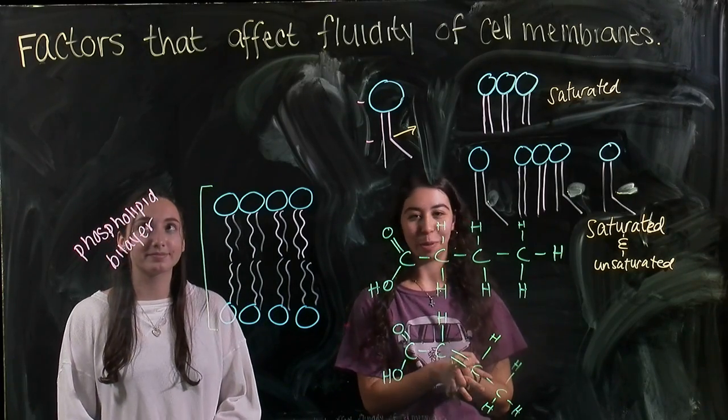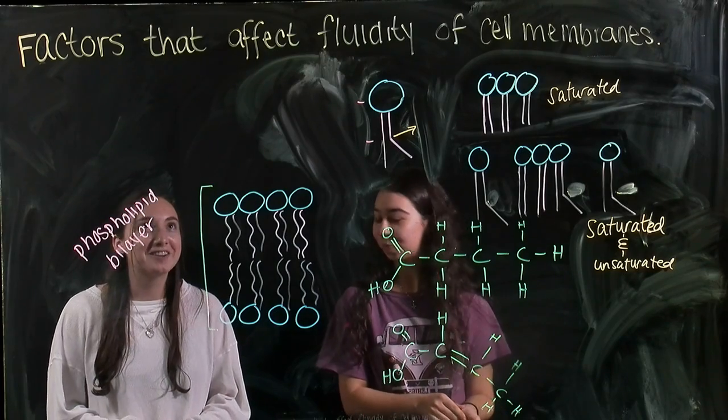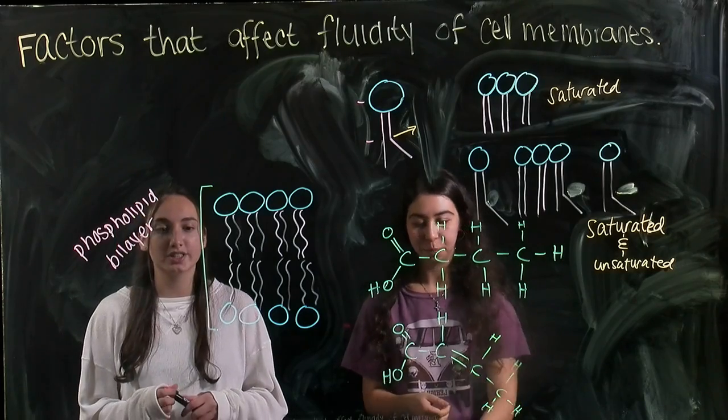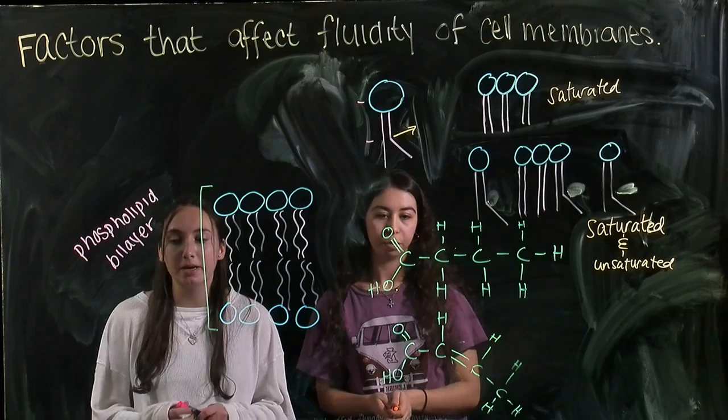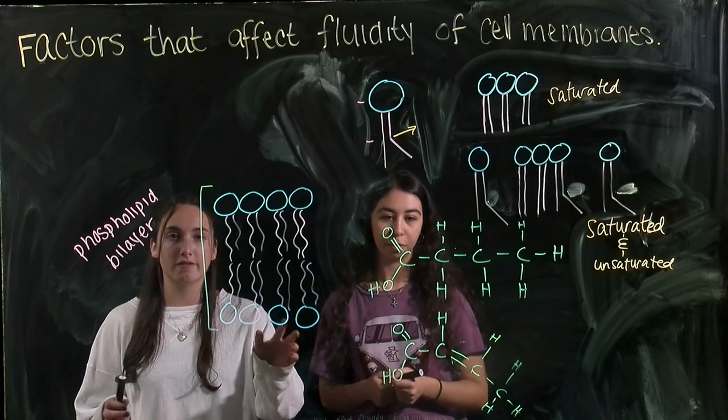All right, so today we're going to be talking about a couple of factors that affect the fluidity of cell membranes. To understand the factors that affect the fluidity, we first have to understand the structure of a cell membrane. A cell membrane is made up of lipid bilayers, which is just two layers of lipid molecules.